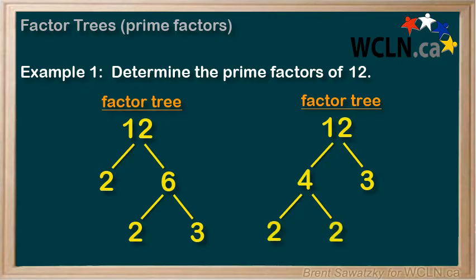Since the 2s are also prime, we're done with those branches as well. Again, the prime numbers are the same: 2, 2, and 3. Thus, it doesn't matter how you start a factor tree. It still results in the same prime numbers at the end of the branches when you're done.